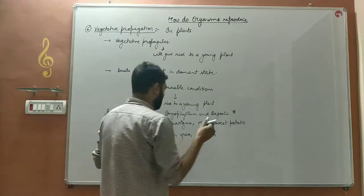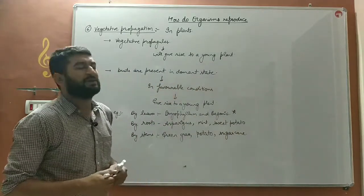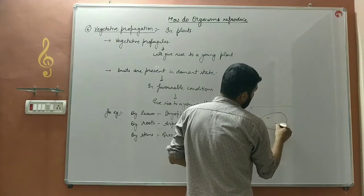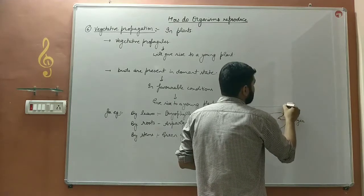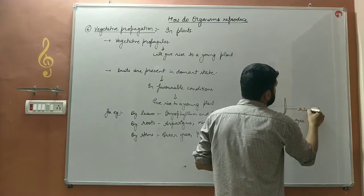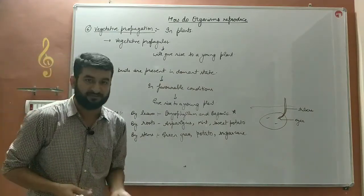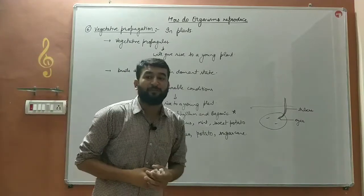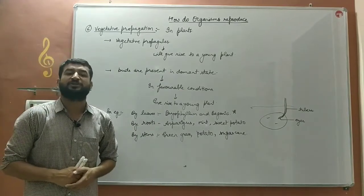The plants which grow by stem include sugarcane as well — this is a very important example. You must have seen the potato — it has certain eyes over it. Those eyes give rise to small thread-like structures known as tubers, and from those tubers a young plant of potato is regenerated. That is known as vegetative propagation.